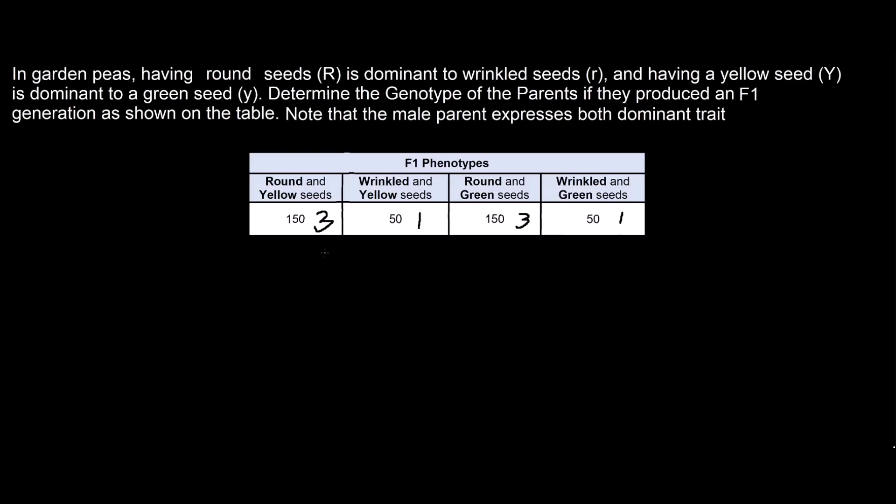Then, applying the product rule, we can separate the two traits that we are dealing with, the seed shape and the seed color.